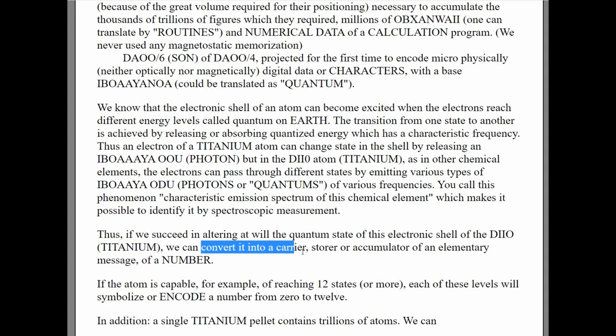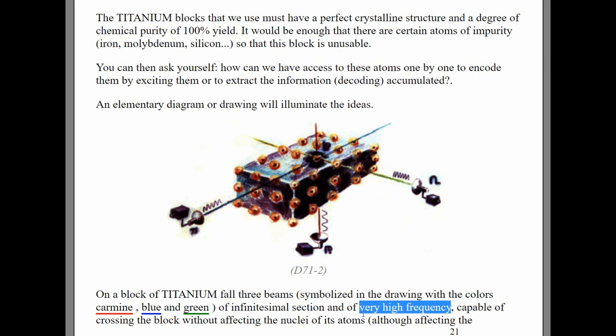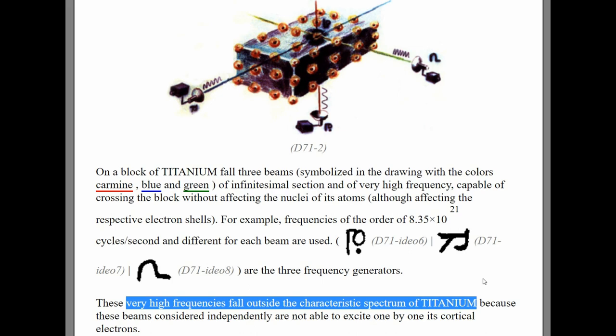They say right here that the emission spectrum of titanium is what they use as storage. These titanium blocks must be 100% pure. That purity allows the titanium block to be in a perfect crystalline form. They access each individual atom to encode or decode information stored in the electron medium, and they access these atoms by very high frequency waves of light. We call these light waves gamma rays, and they use three beams to intersect each atom inside the titanium cube. These gamma ray frequencies are very high, allowing the beams to pass through the titanium block as if it were transparent.